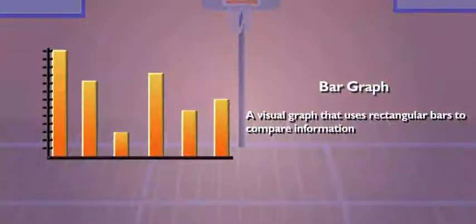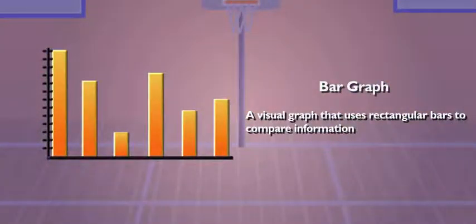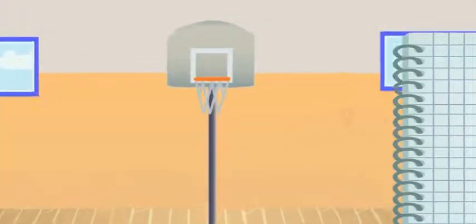What about a bar graph? It's a visual graph with rectangular bars. You can use the bars to compare the number of points the players on the team have scored. Exactly what I need. How's it work? I'll show you.